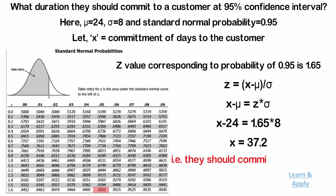That is, they should commit a development time of 37 days to the customer. This is all about normal distribution. We will start learning measurement system analysis from the next video.